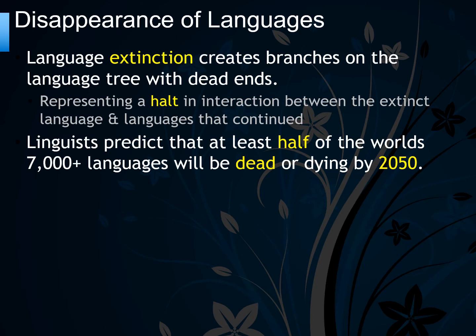The disappearance of languages — language extinction creates branches on the language tree with dead ends, representing a halt in interaction between the extinct language and languages that continued. Linguists predict at least half of the world's 7,000-plus languages will be dead or dying by 2050.